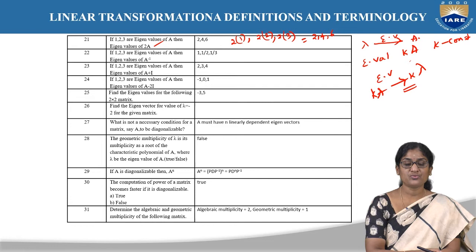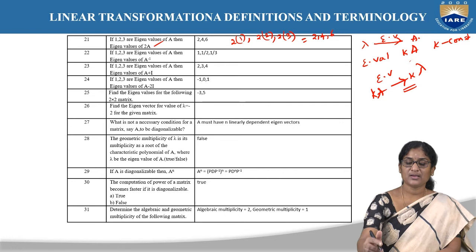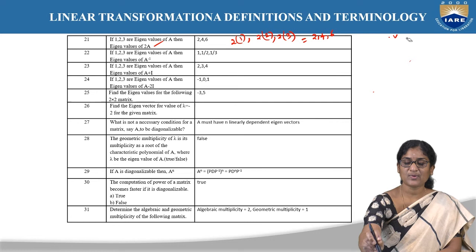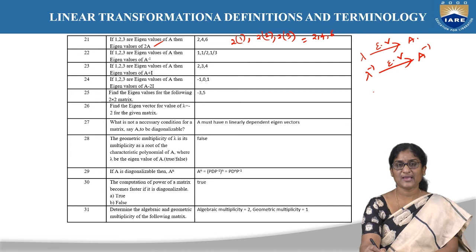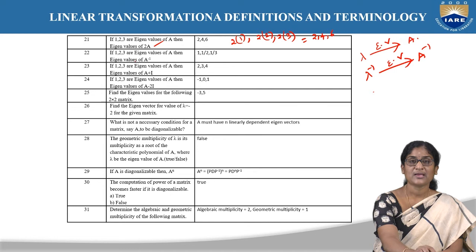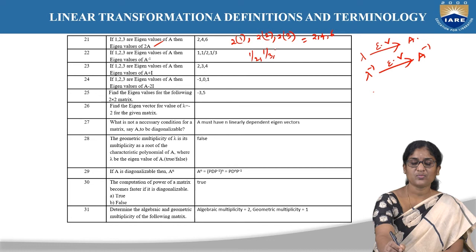If 1, 2, 3 are the eigenvalues of A, what are the eigenvalues of A⁻¹? Based on the property that if λ is an eigenvalue of A, then λ⁻¹ is an eigenvalue of A⁻¹ — the eigenvalues of A⁻¹ are 1/1, 1/2, and 1/3.